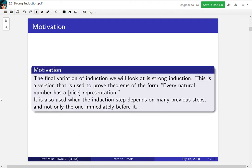The motivation is that strong induction is a special type of induction that is used to prove theorems of the form, every natural number has a nice representation, where nice depends on the context. We'll look at two examples today. This is also the final variation of induction that we'll look at.